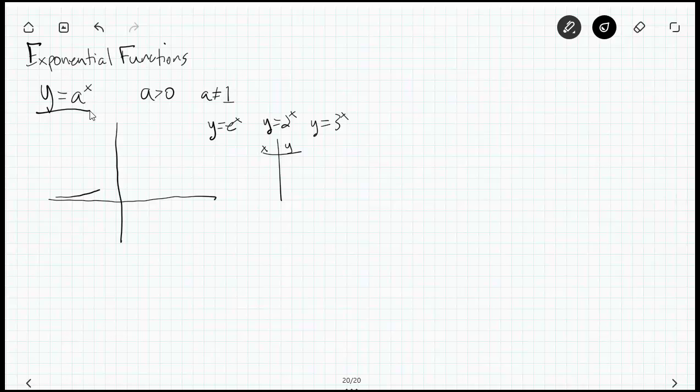All right, so we know that y equals a to the x, if x is greater than zero, passes through the point always zero comma one. It has a horizontal asymptote—it's got a H.A. at y equals zero.